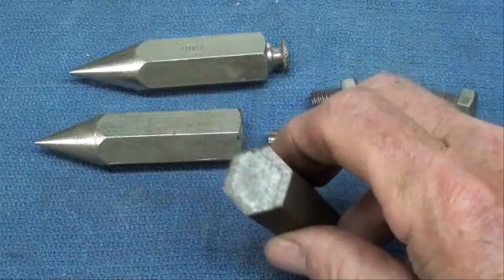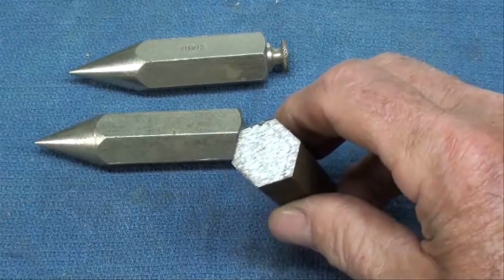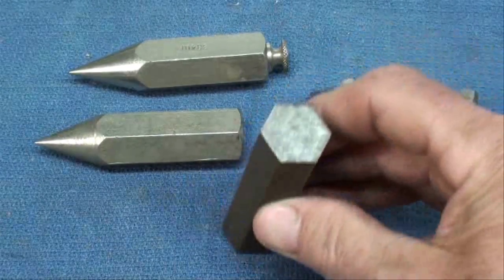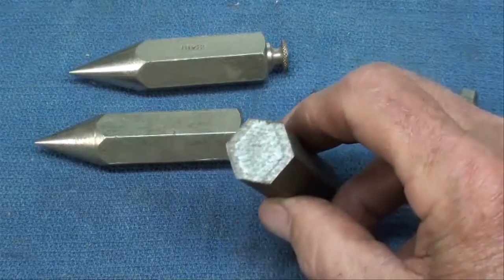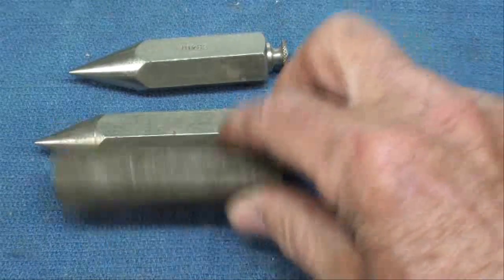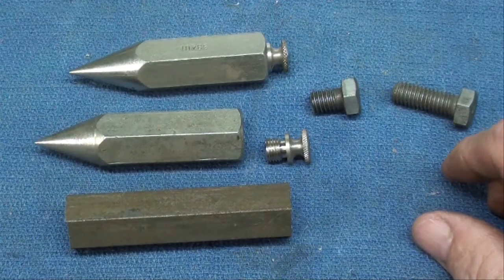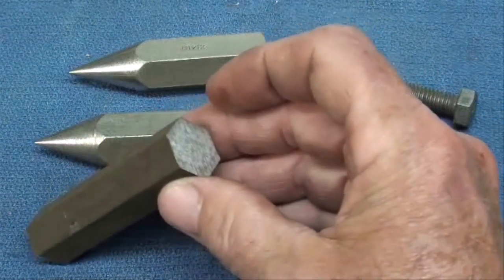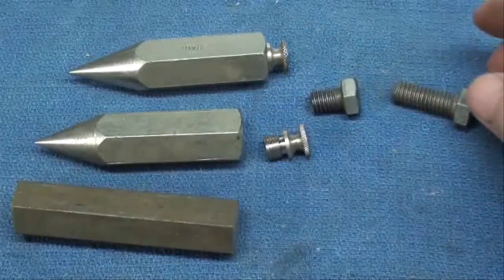And we're going to start with hexagon stock. It would be nice to have a little bit larger stock like 7/8 or 1 inch but this is 3/4 inch across the flats. So that's what we're going to do and we'll start by going over to the atlas lathe and we'll face one end and then we're going to drill it.